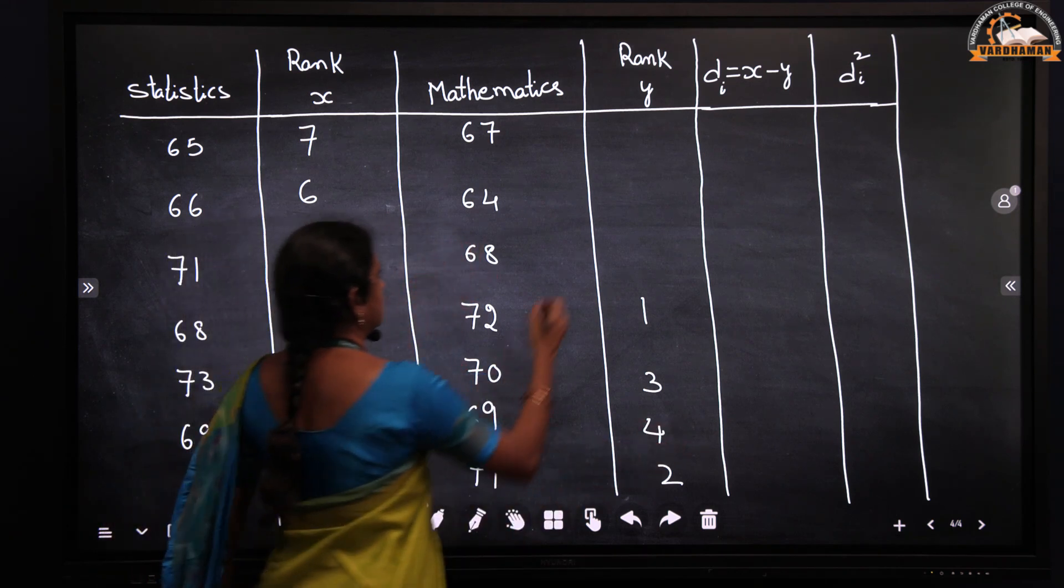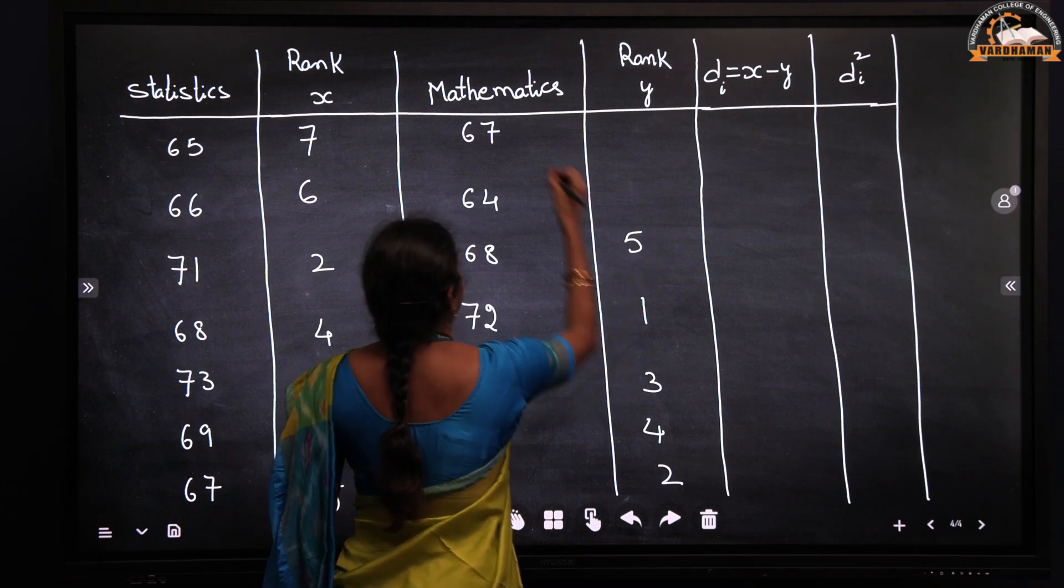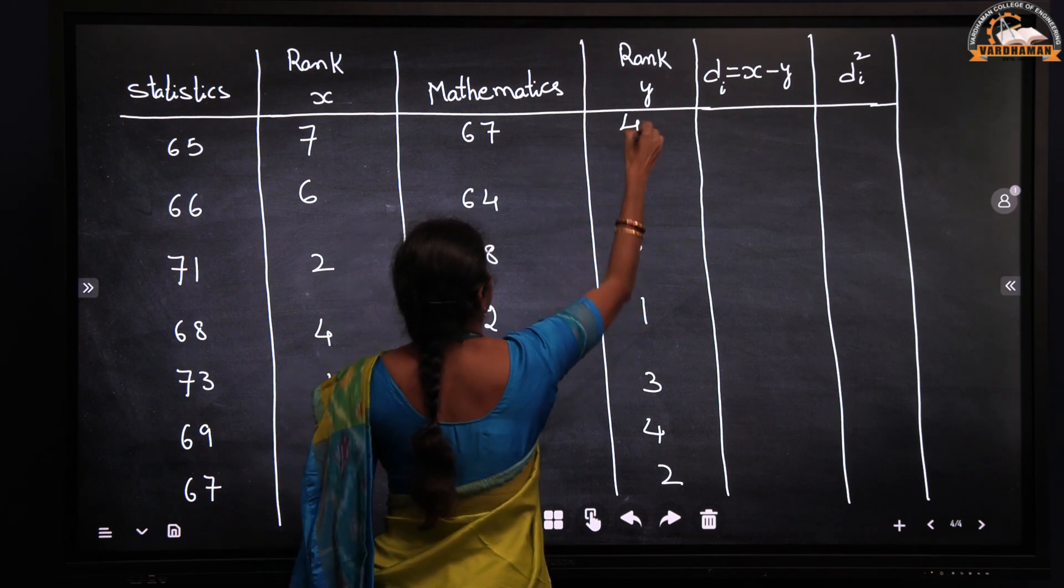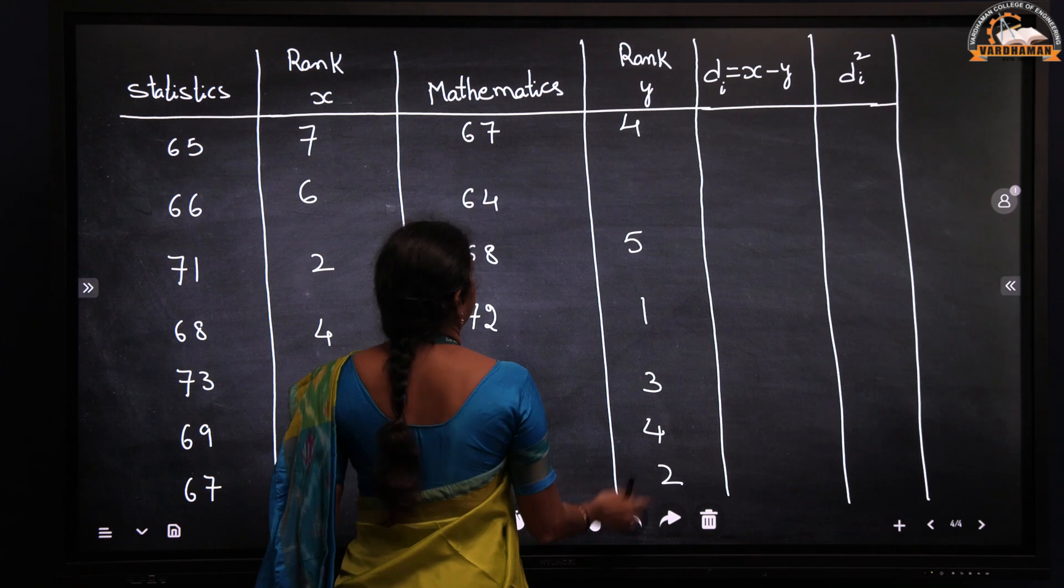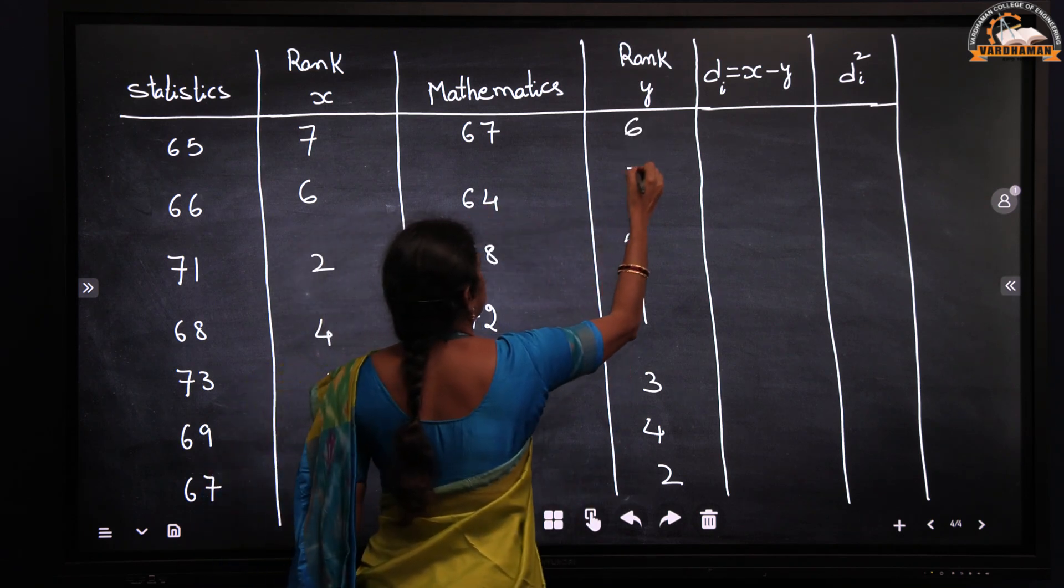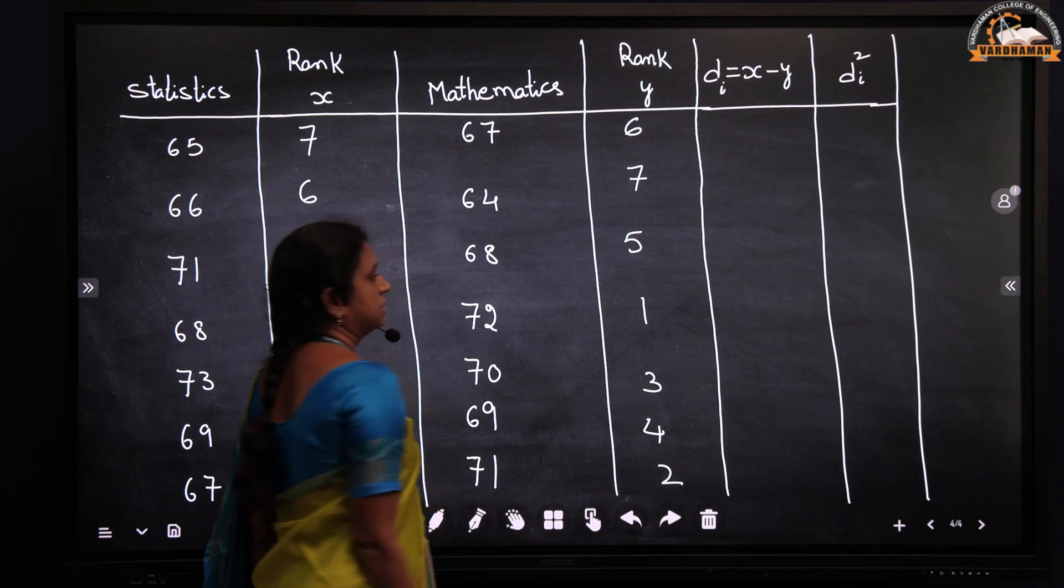Next highest is 68, so 68 is allotted 5, then 67 is allotted 6, and last is 64 which is allotted 7.